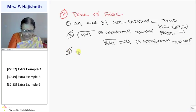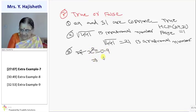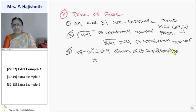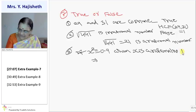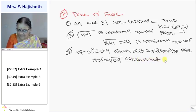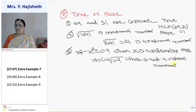Now third one is, if x square is 0.9 when x is a rational number. It is a false statement. Why it is false? Because x is square root of 0.9, which is not a rational number. It is not a rational number. Because 0.9 is not a perfect square.